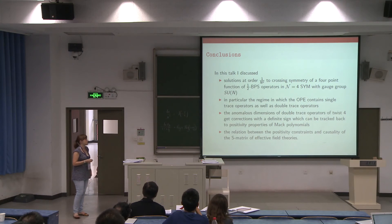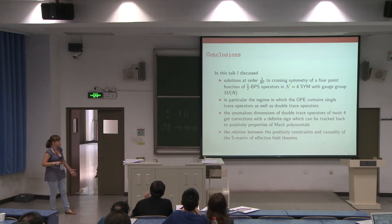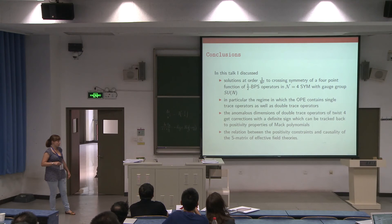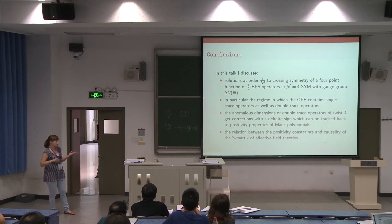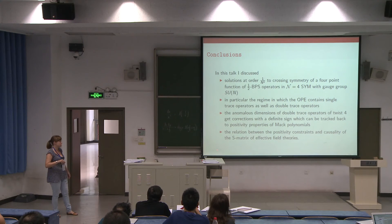Let me conclude. In this talk, I discussed the solution at order 1/N² to crossing symmetry of a four-point function of half-BPS operators in N=4. I studied in particular the regime in which the OPE contains both single-trace and double-trace operators. I studied the correction to the anomalous dimension of double-trace operators of twist 4, which receives corrections with a definite sign. This definite sign can be traced back to positivity properties of Mack polynomials. At the end, I sketched the relation between this positivity constraint and causality constraints from effective field theories. Thank you very much.